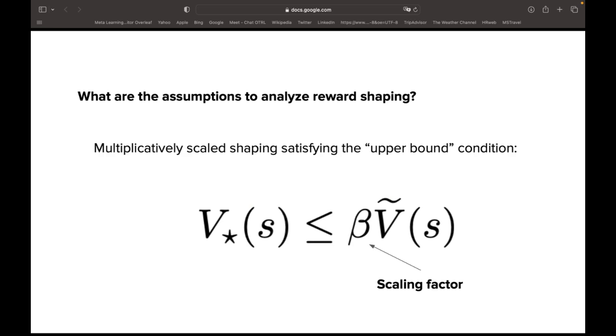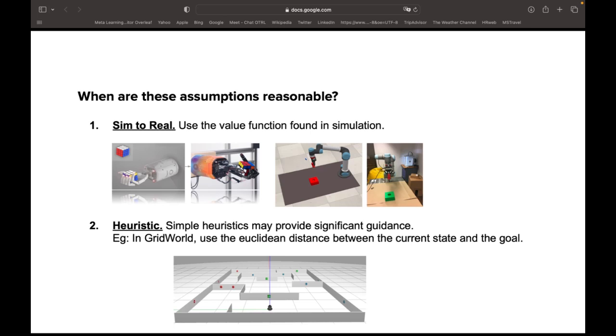For simplicity, we assume V tilde satisfies the following upper bound that is shown on screen. This is where there exists a scaling factor parameter beta such that V star is upper bounded by beta V tilde for all states in the state space. This sandwich property is a reasonable condition that may arise in many plausible forms of V tilde estimators. For example, when the candidate V tilde is computed in a simulation environment, or when we use a heuristic, such as Euclidean distance between the current state and the goal in a grid world environment.